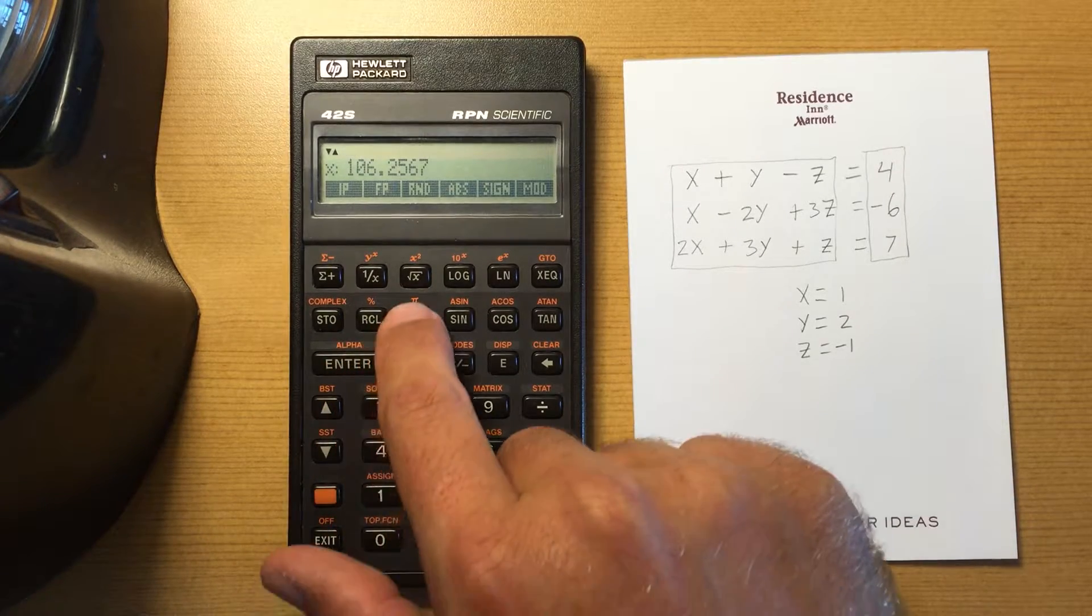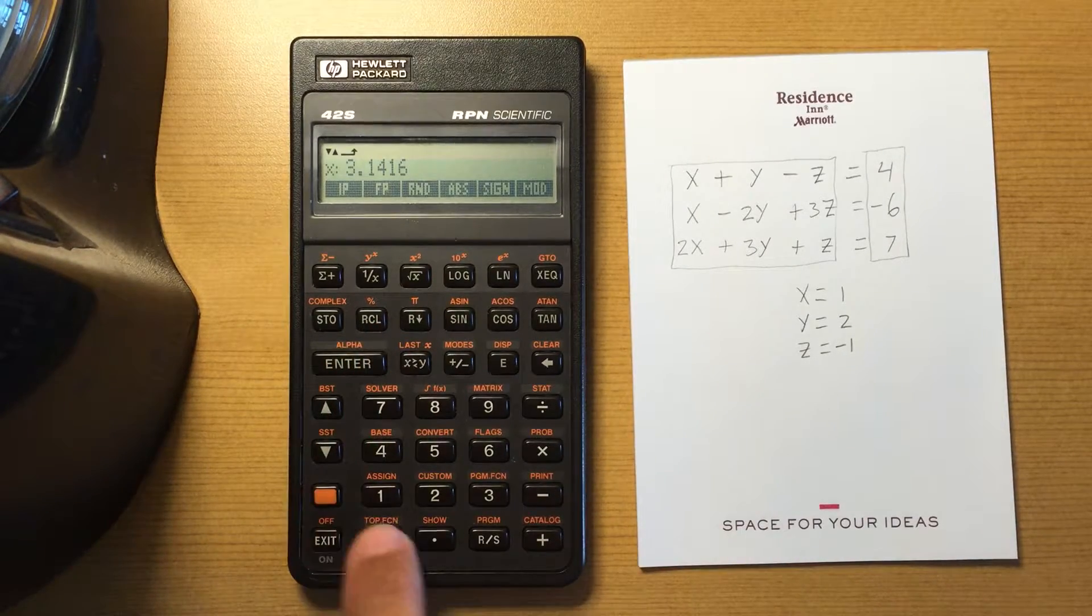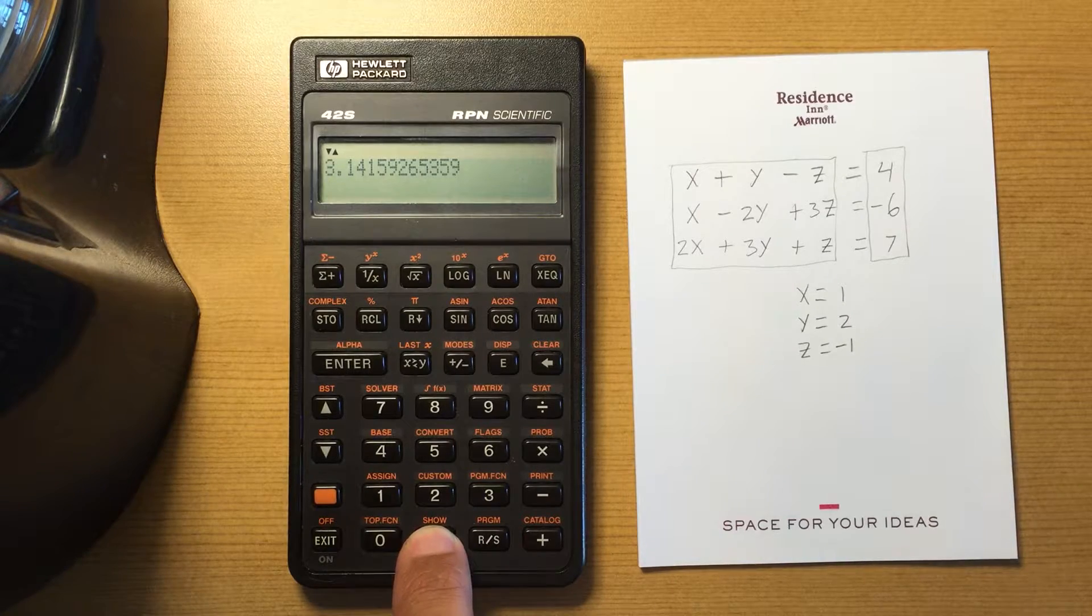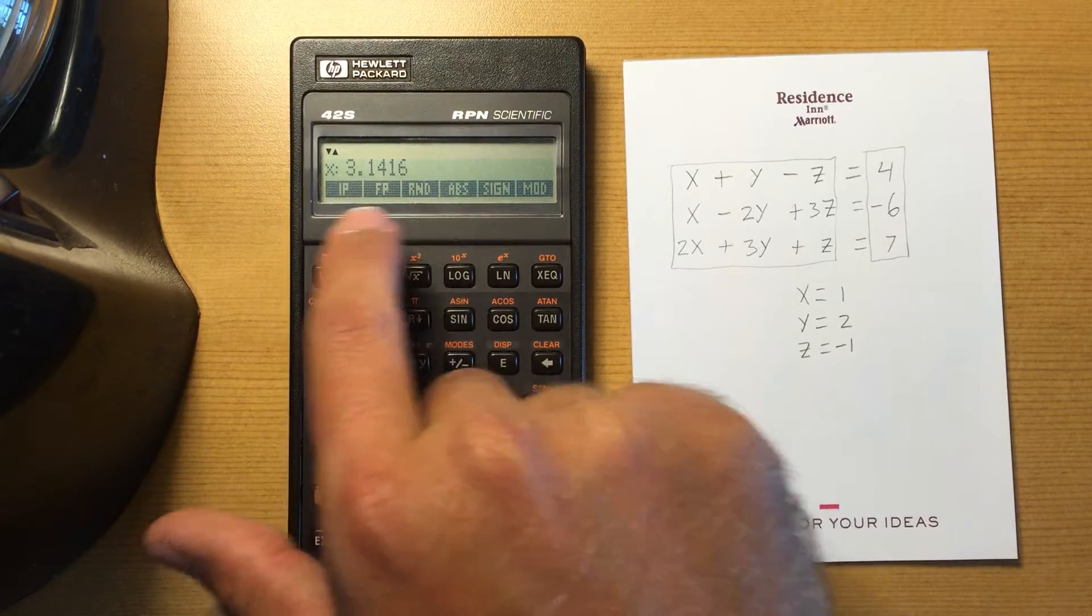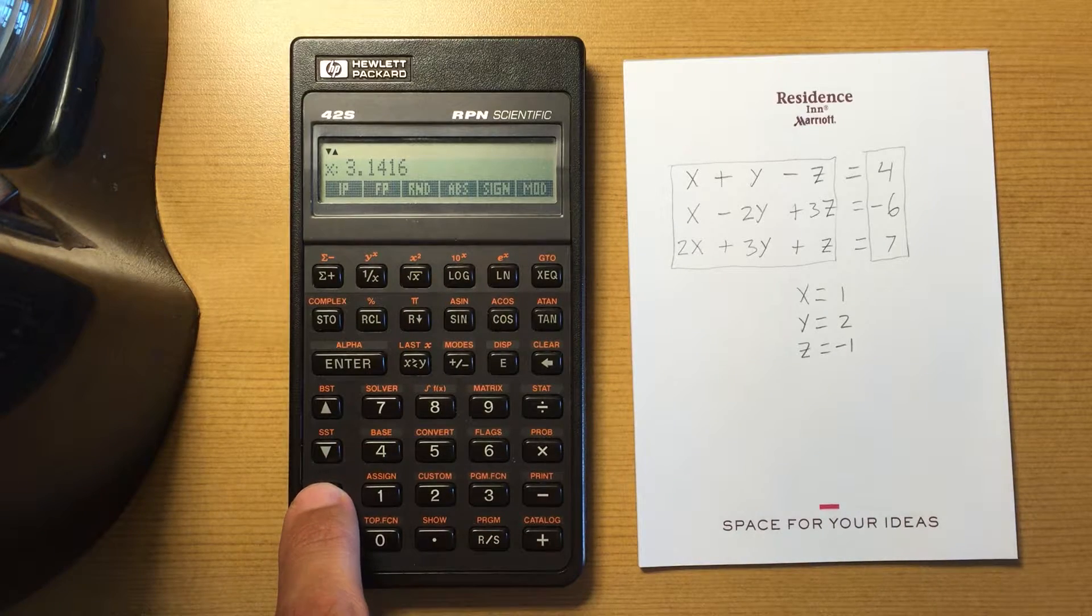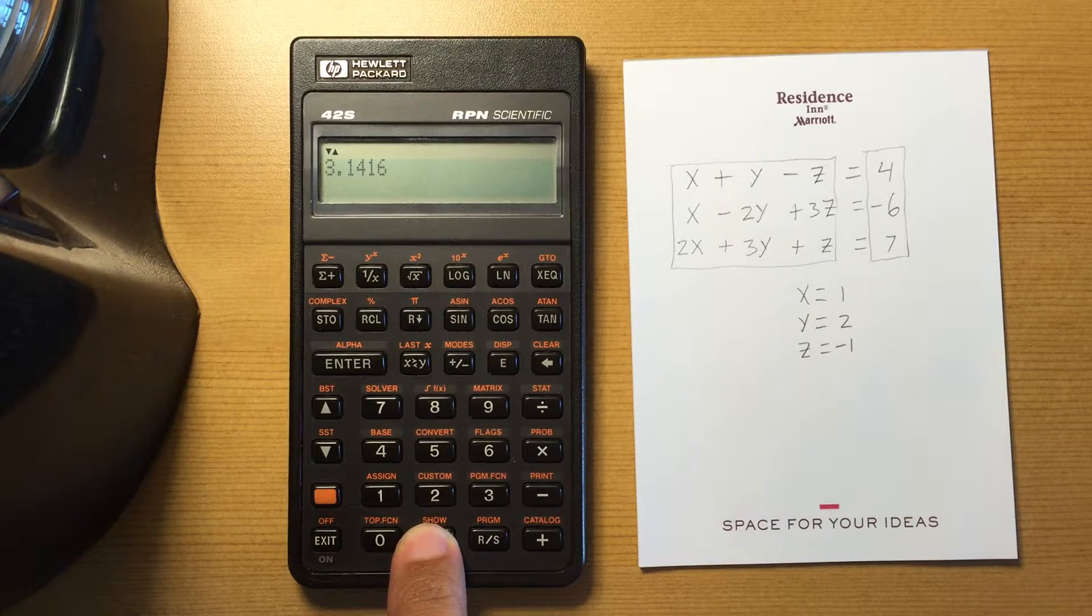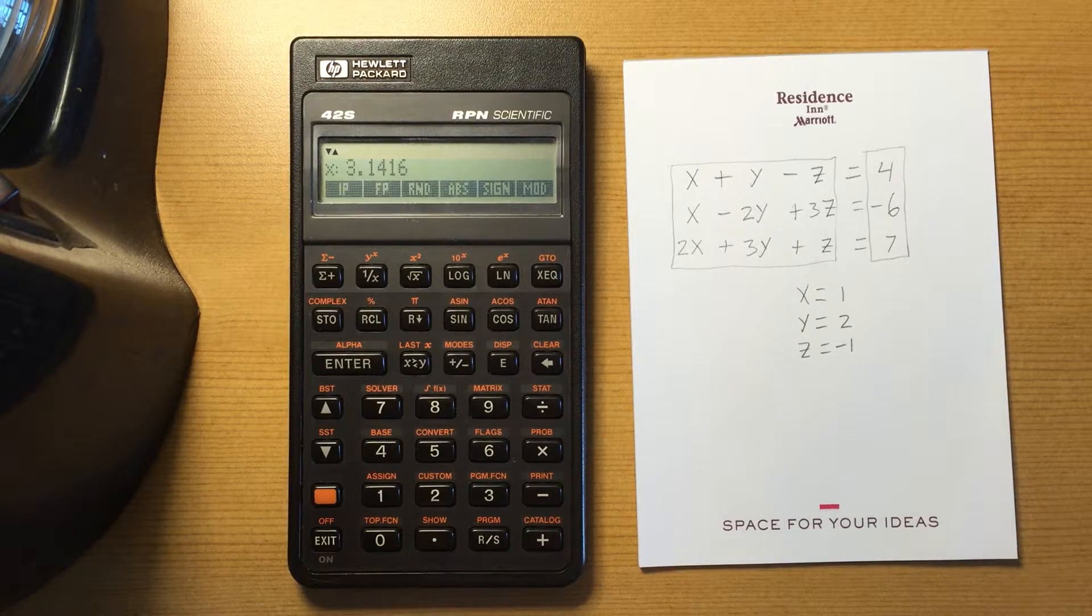So for example, let me just enter in pi. If I show the whole number, that's what it looks like. If I round it, it rounds to whatever I have shown on the display. So now if I show the number, it's rounded off the last portion.